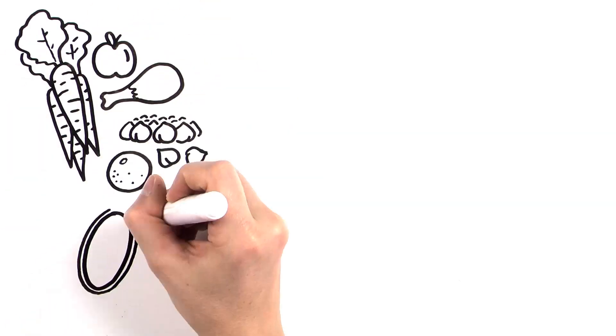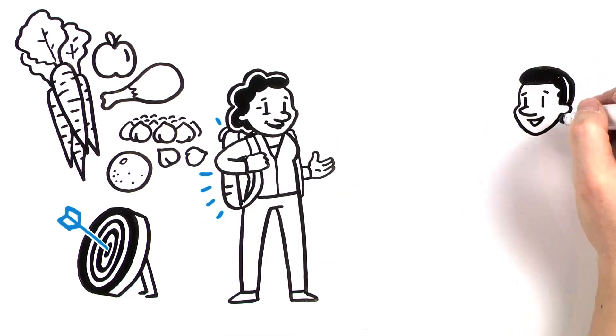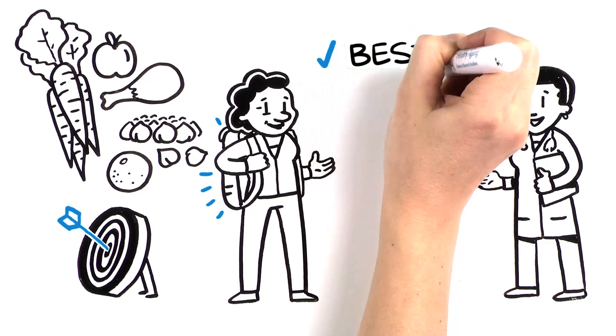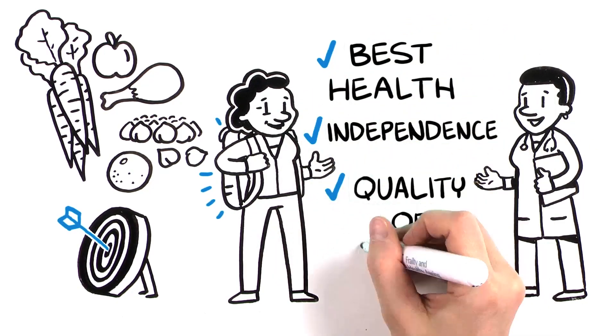Having good habits and setting targets allows you to lighten your frailty load. The earlier you recognize and act on frailty, the better the chances of achieving your best health, keeping your independence, and enjoying quality of life for longer.